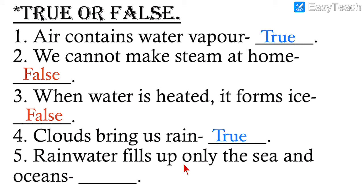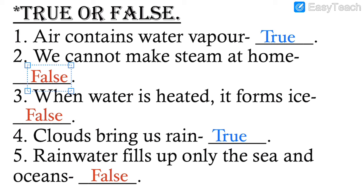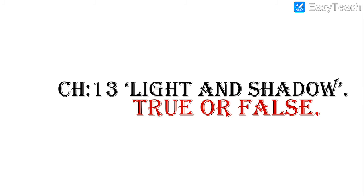Number five: Rainwater fills only the sea and ocean — this is false. Rainwater fills up all things: lakes, rivers, ponds, canals, and dams. Rainwater also seeps inside the ground, which is called groundwater. Those were the five True or False of chapter 12.